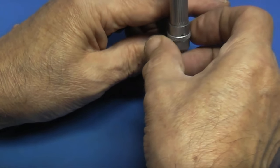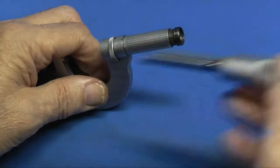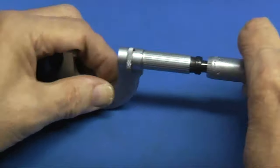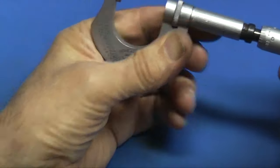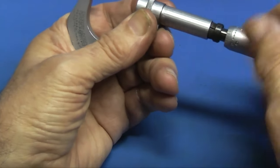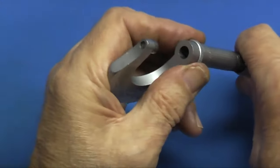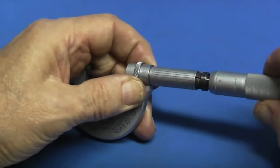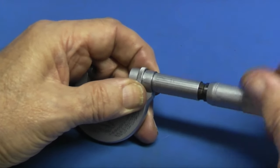That peg goes down inside. When you reassemble it, this goes into there and you have to get the anvil of the micrometer through the locking ring and then you can start to tighten it up.